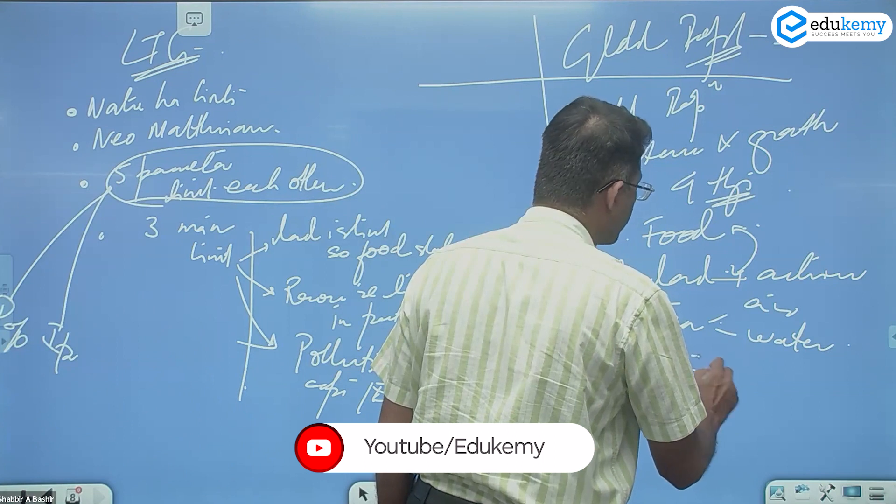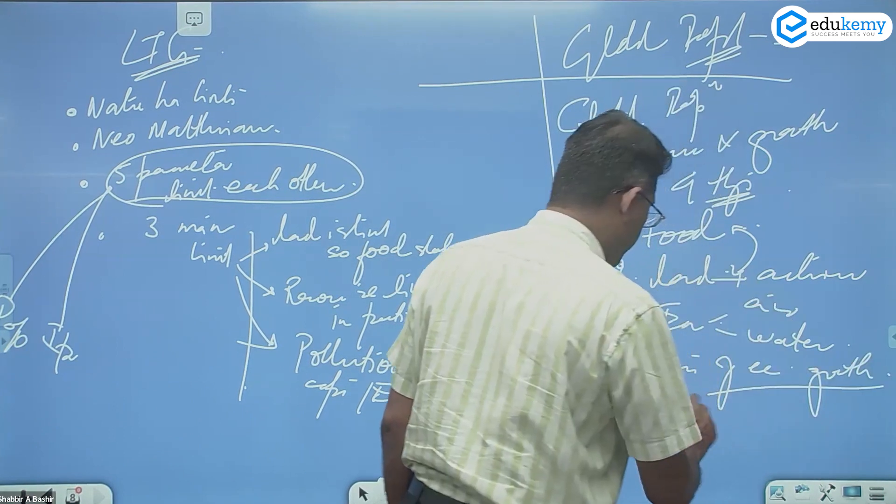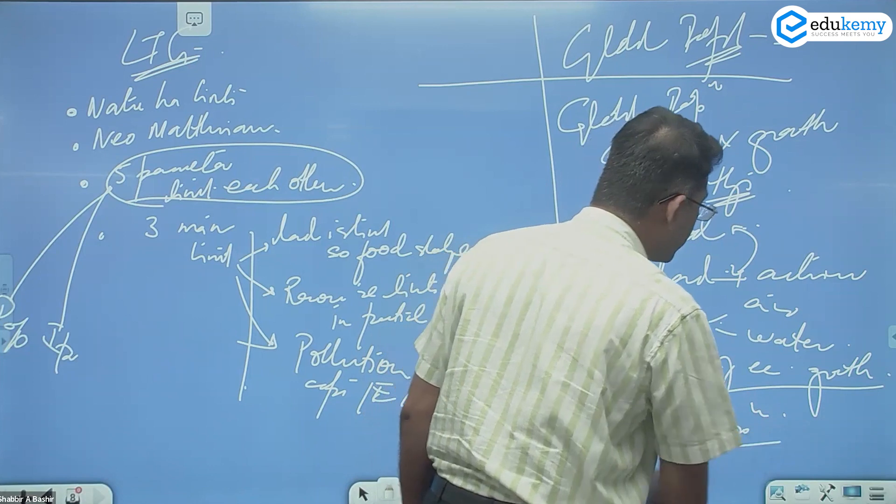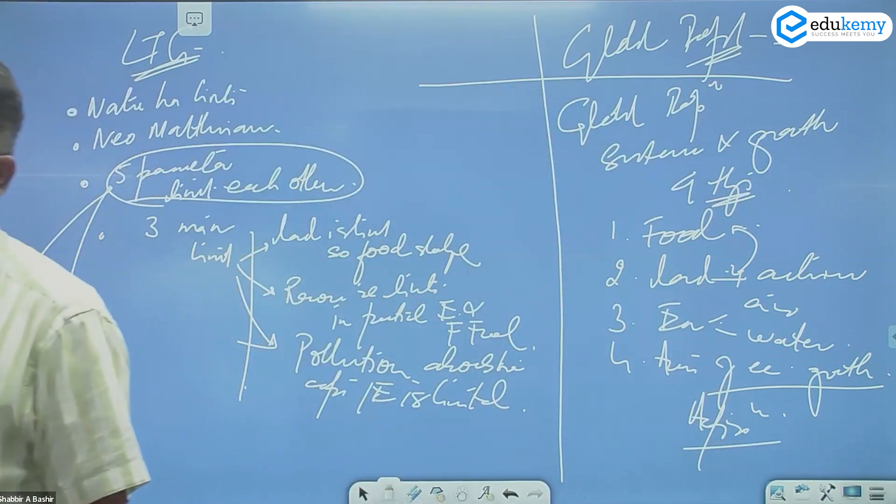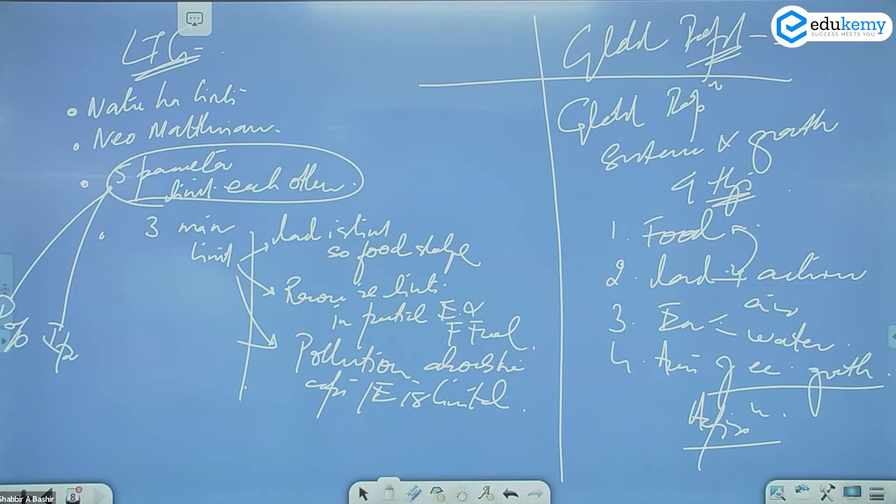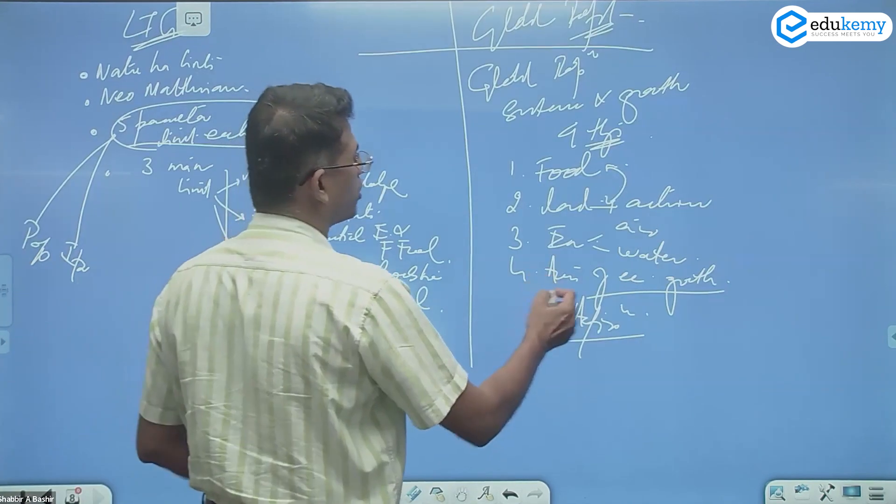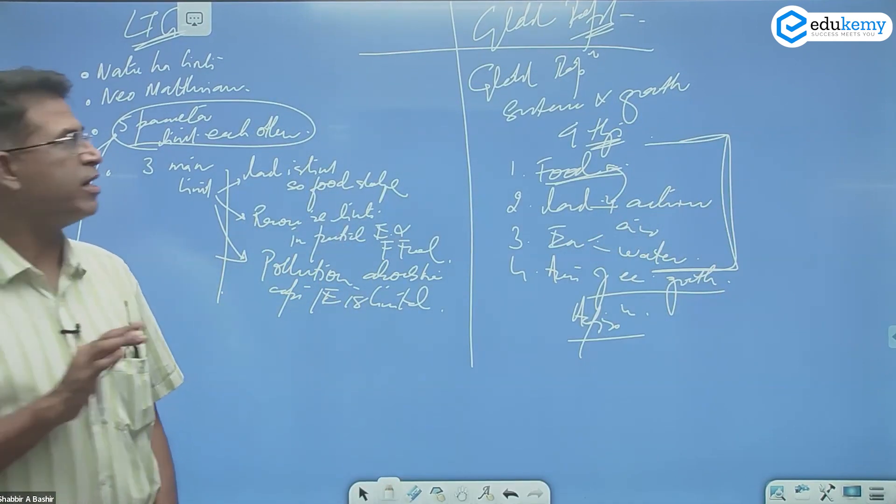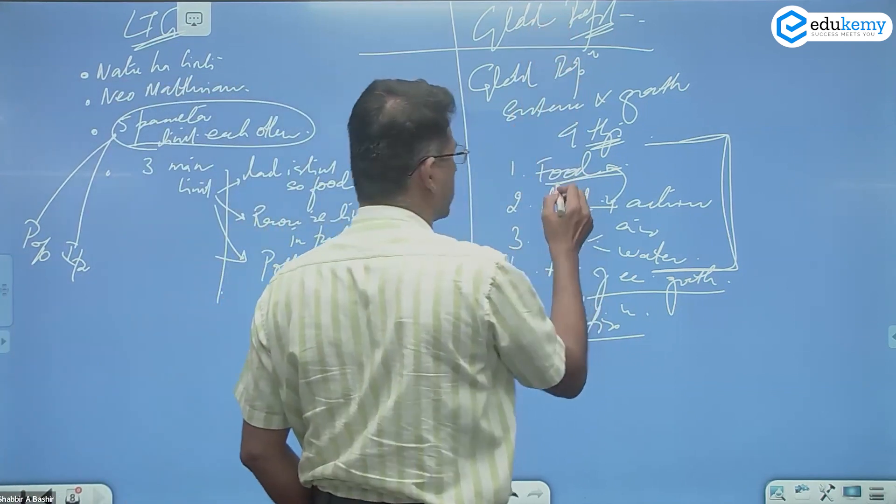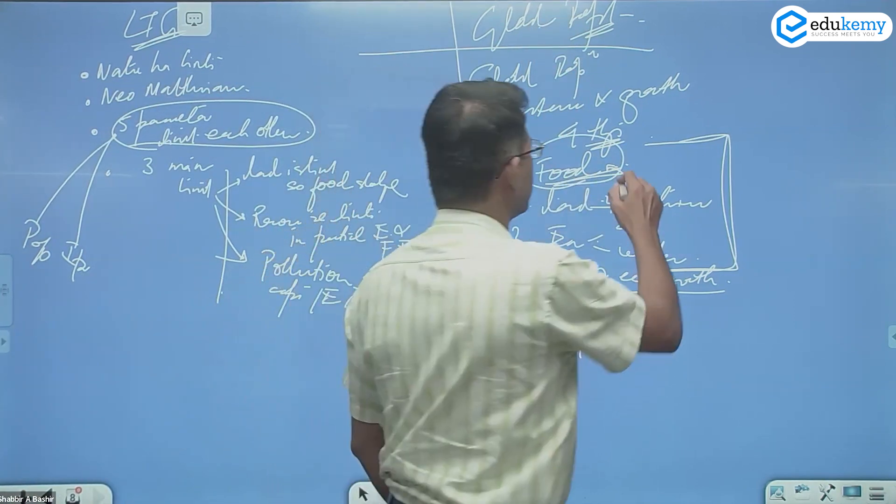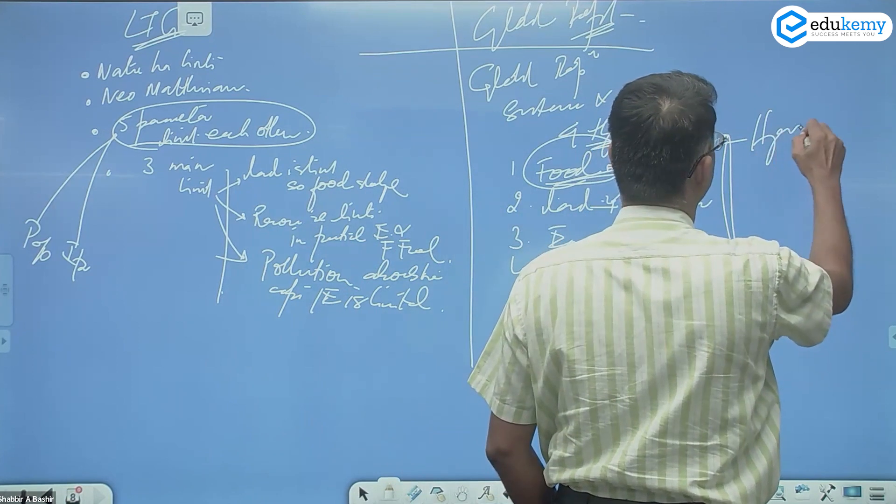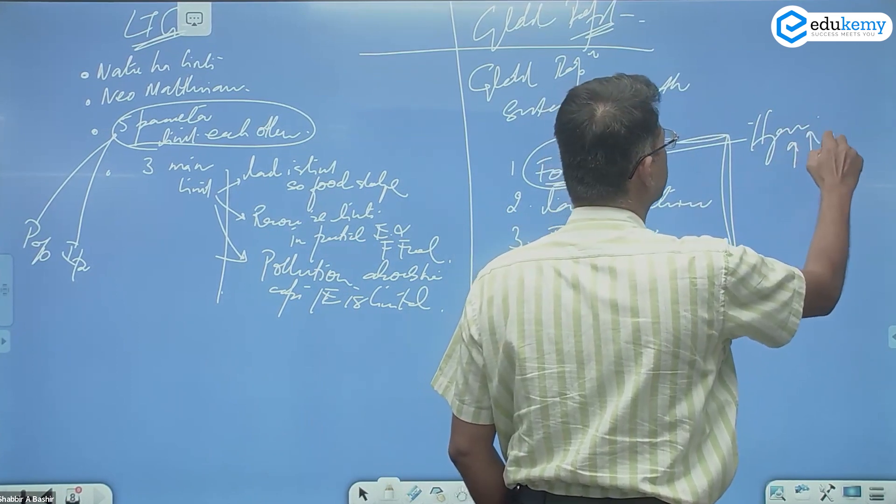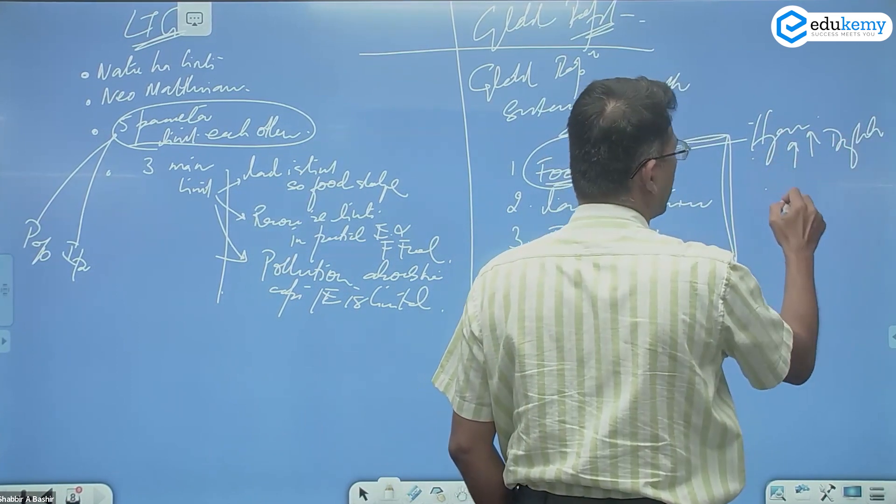The third limit is environment which is air and water, and fourth we require is avenues of economic growth, avenues for aspirations. You need to have career growth, you need to have economic growth. And we realize these three are limited. Global population in relationship to global population food is limited, so we can talk about the hunger problems.